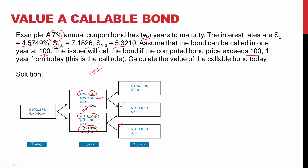In the upper node, the computed value of $99.830 is less than the call price of $100, so the second line shows $99.830. In the lower node, $101.594 exceeds the call price of $100, so in the valuation process we must use $100 rather than the calculated price. Let's now calculate V0, the value of the bond today.